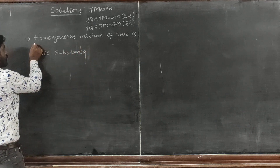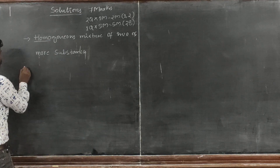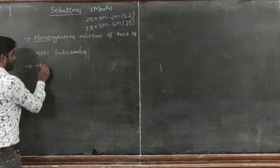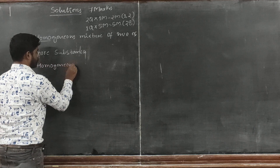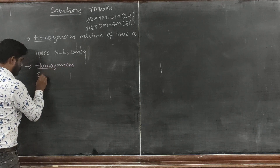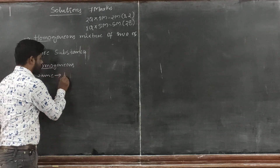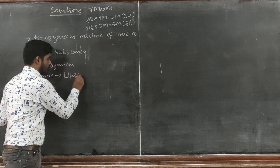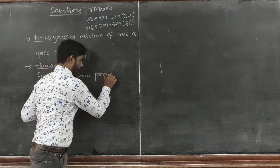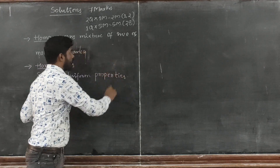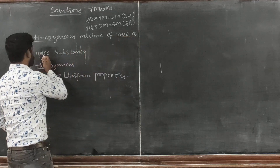Now we know 'homo' means same. So homogeneous means they should have similar or uniform properties. Solutions with uniform properties are called homogeneous solutions, and it is a mixture of two or more substances.